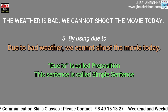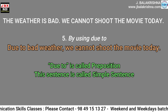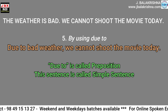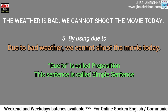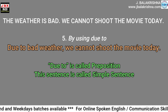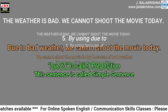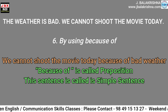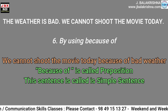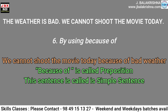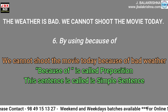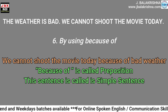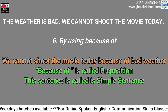Method five: by using 'due to' — 'Due to bad weather, we cannot shoot the movie today.' 'Due to' is called a preposition and this sentence is called a simple sentence. Method six: by using 'because of' — 'We cannot shoot the movie today because of bad weather.' 'Because of' is called a preposition and this sentence is called a simple sentence.